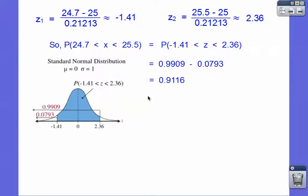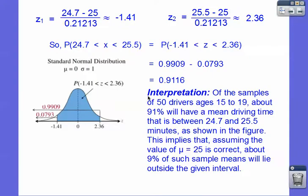And then now what are you supposed to do? Well, we're supposed to interpret that. So that's roughly 91%. Let me start over. Of the samples of 50 drivers ages 15 to 19, about 91% is going to have a mean driving time that's somewhere between 24.7 and 25.5 minutes, as shown over here.